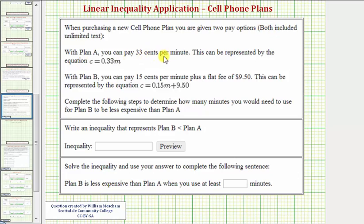With plan A, you pay 33 cents per minute, which can be represented by the equation C equals 0.33M, where M is the number of minutes and C is the total cost.